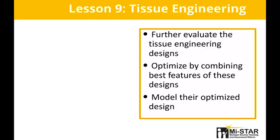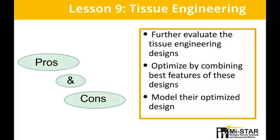Having identified several tissue engineering designs using their continuum tools, students next evaluate the pros and cons of each design in Lesson 9. Students review the features of the remaining designs and attempt to optimize a tissue engineering solution by combining the best features while minimizing the poor ones. Students explain why their tissue engineering design will work, using a model of their design as part of their evidence.